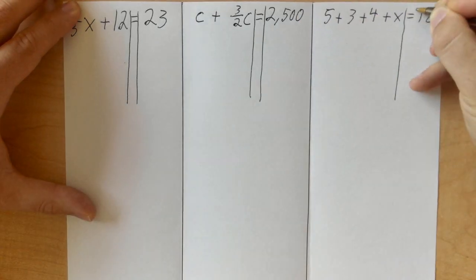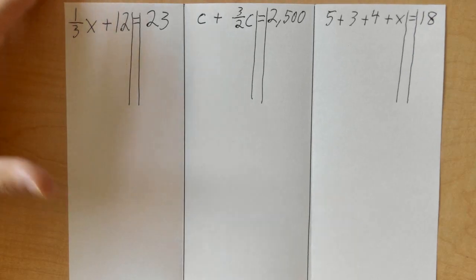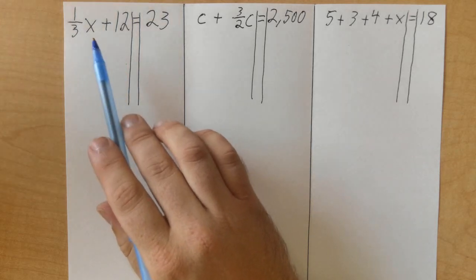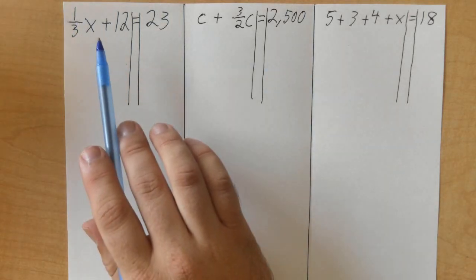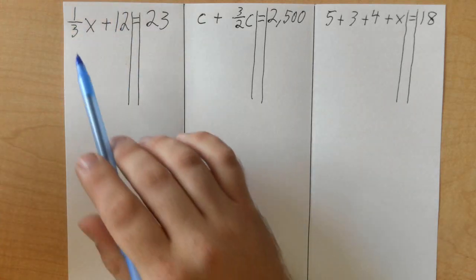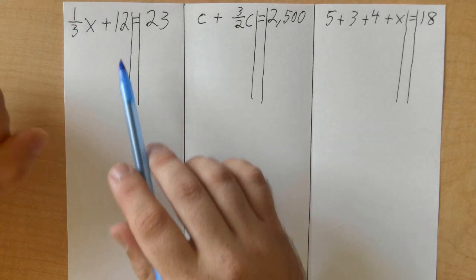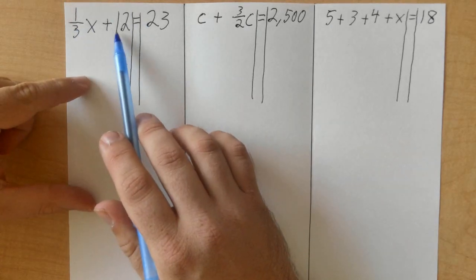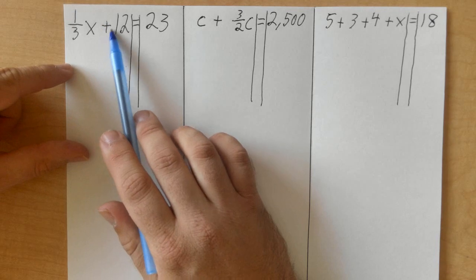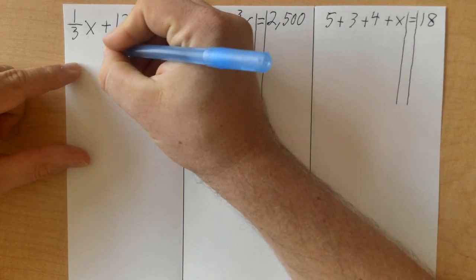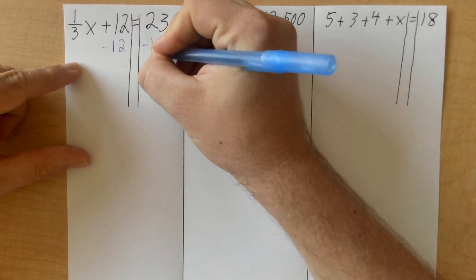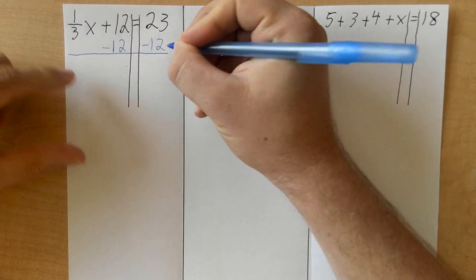Now let's take a look at this first one. We want to get the variable by itself in each of these. To do that, we're going to work backwards. Order of operations says we would multiply then add; we're going to go backwards. I'm going to look at this plus 12 first, and to solve we're going to do what I like to call the inverse of adding, or the opposite of adding, so I'm going to subtract 12. What you do on one side you have to do on the other.